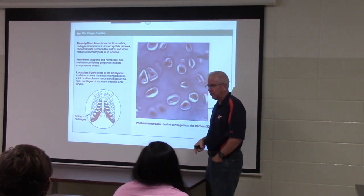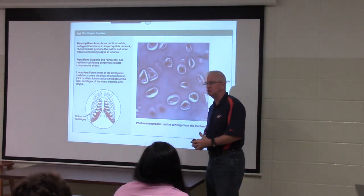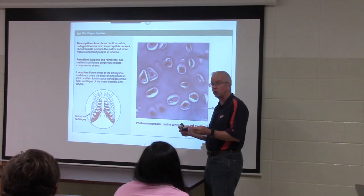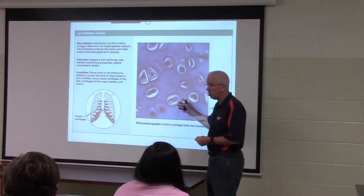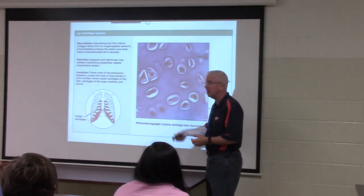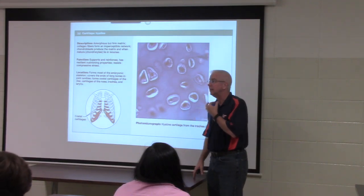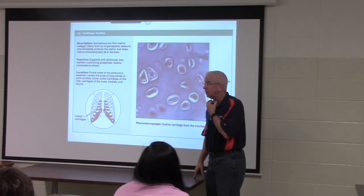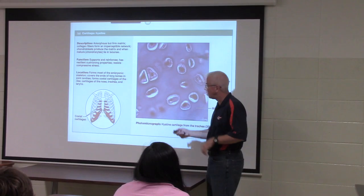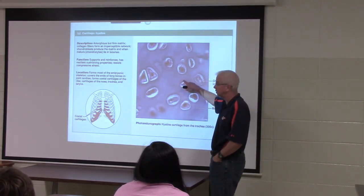In the larynx there are six named cartilages - three paired and three unpaired. Not all are hyaline, but the bulk of the mass is hyaline cartilage. This is the thyroid cartilage, commonly called the Adam's apple - the largest and easiest to palpate.